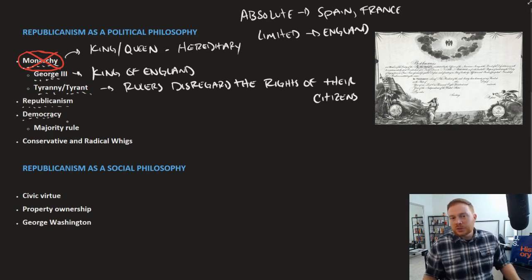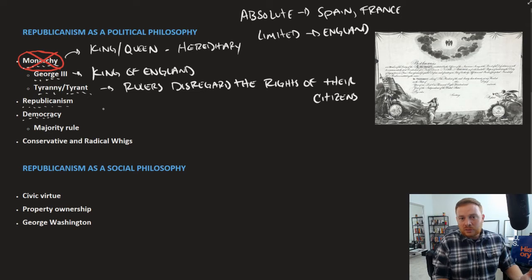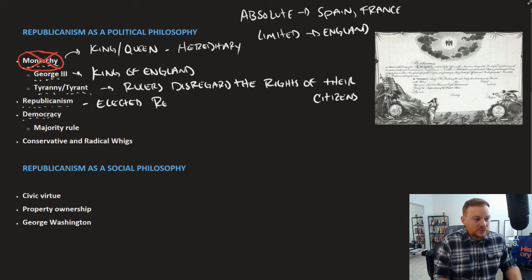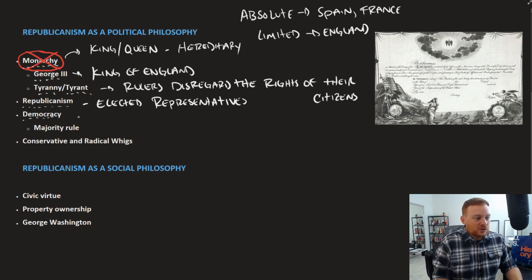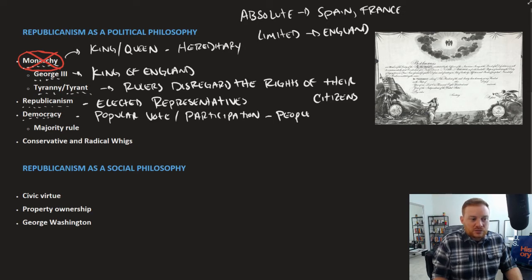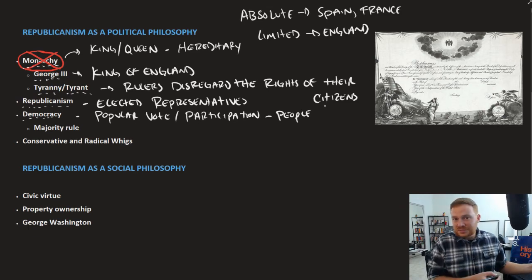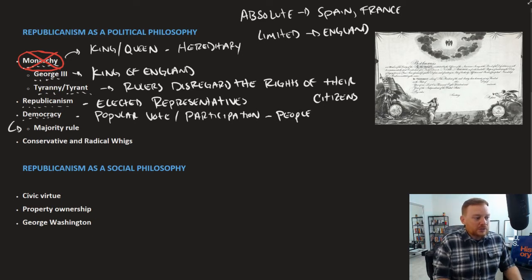Republicanism and democracy are a little bit related, but there is an important difference. A republican government, or republicanism, is the idea that you have elected representatives who make the laws, run the government, and do the things that are necessary. Democracy is more about popular participation — the people themselves make the laws. In a purely democratic system, all citizens have a say in what the laws end up being, which essentially amounts to majority rules.